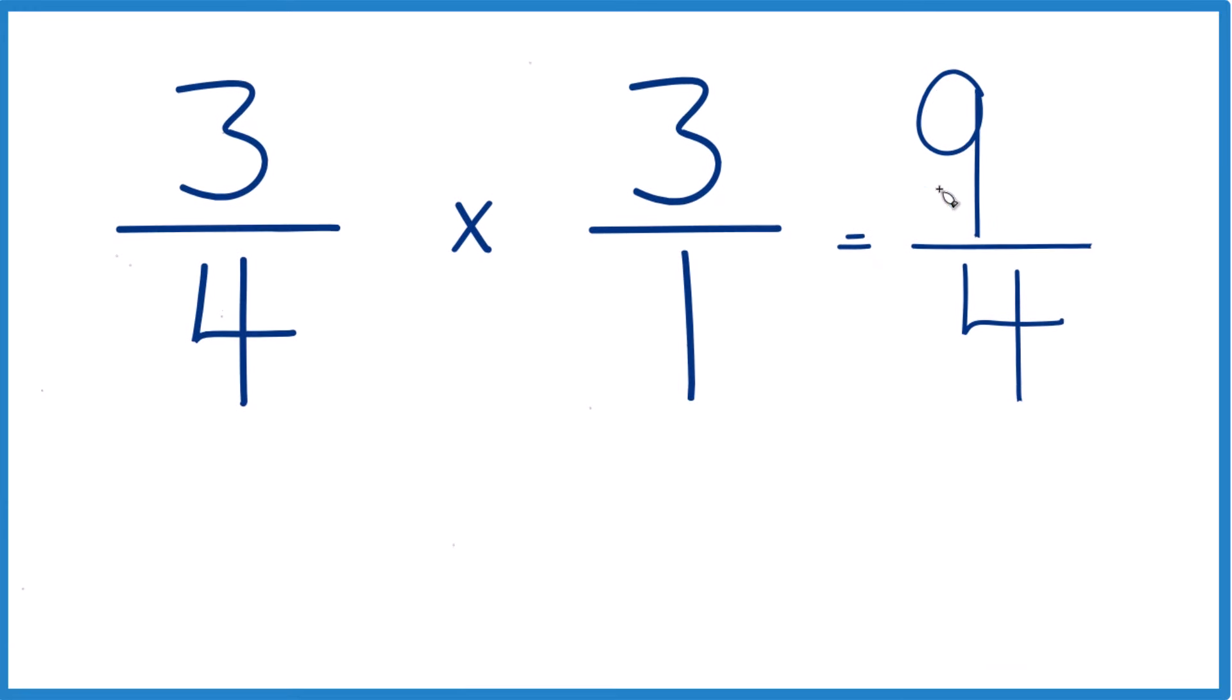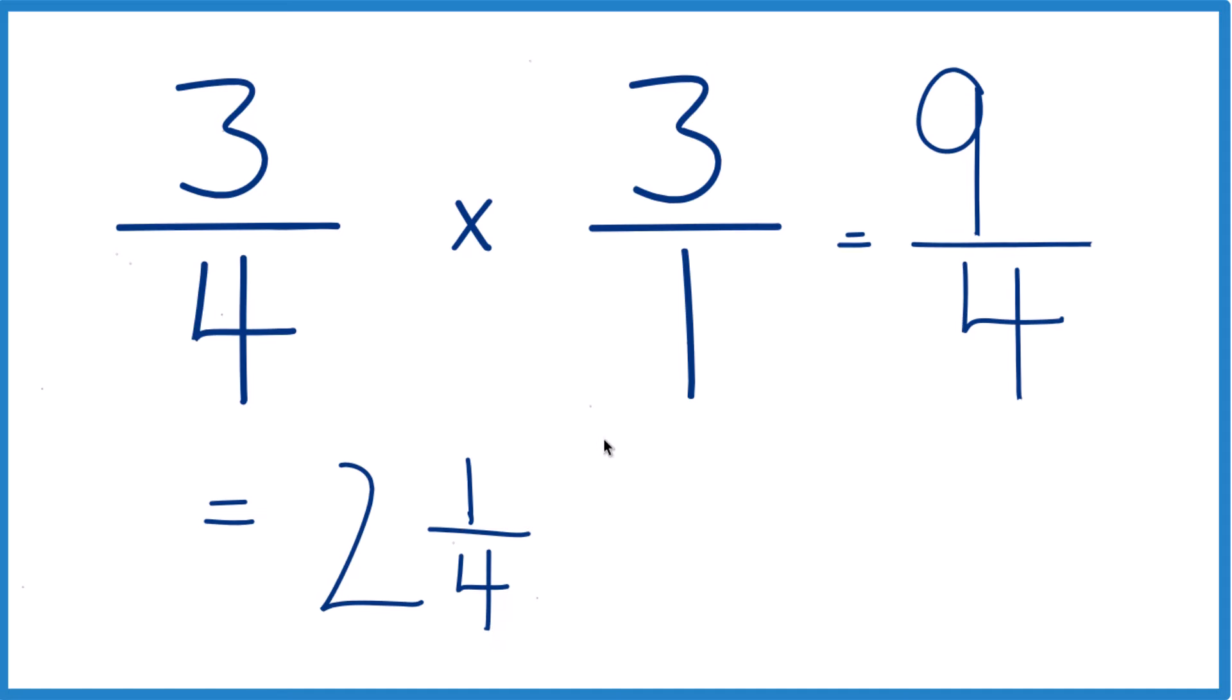So four goes into nine, let's see, two times four would be eight, with one left over, and we just bring the four across here. So nine-fourths, that's the same as two and one-fourth. So in answer to our question,